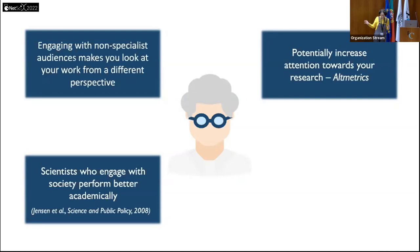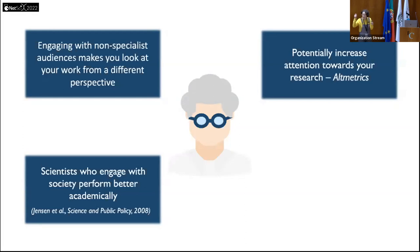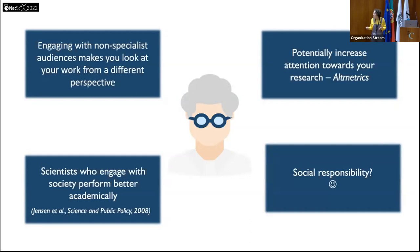Alternative or complementary metrics measure something else: the attention of society right after a paper is published. This includes the number of news stories about your research, mentions in social media, number of downloads, and so on. It operates on a different time scale — citations take one to two years to accumulate, while altmetrics start the moment your paper is published. That's why many people prefer 'complementary' — these are different things on different time scales.